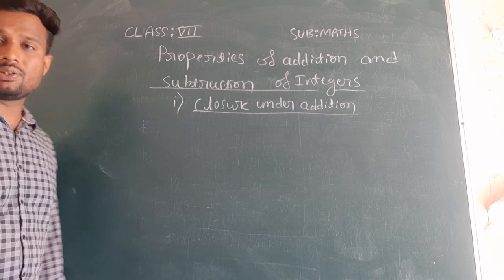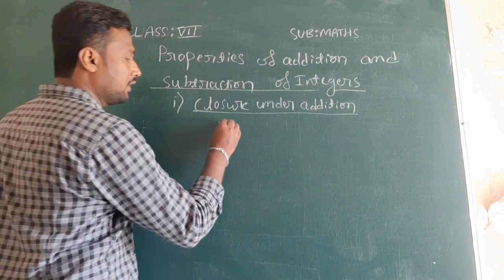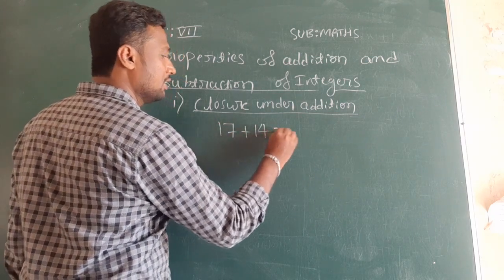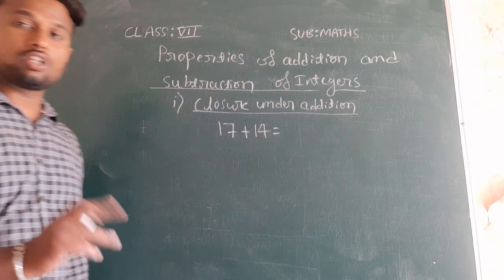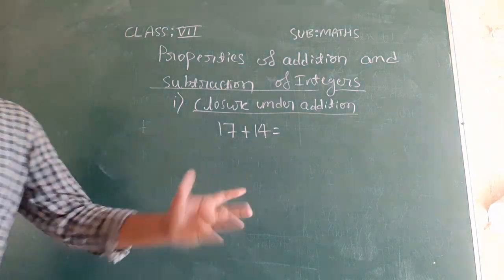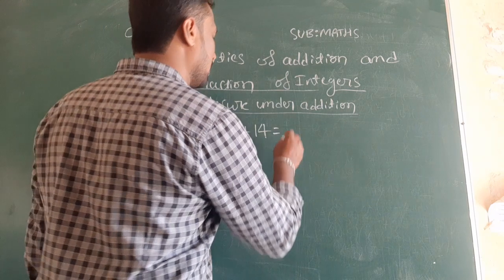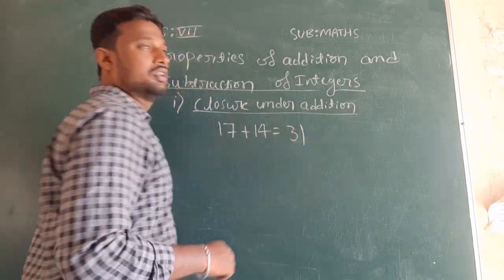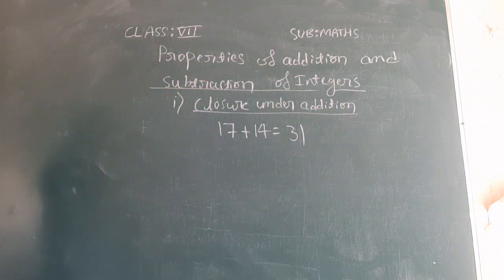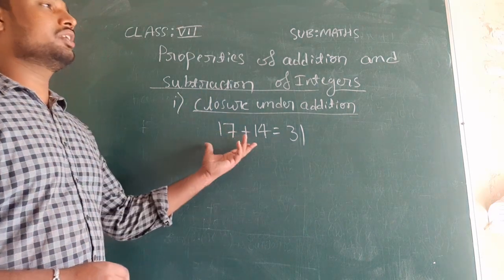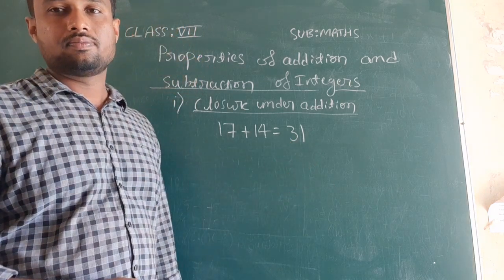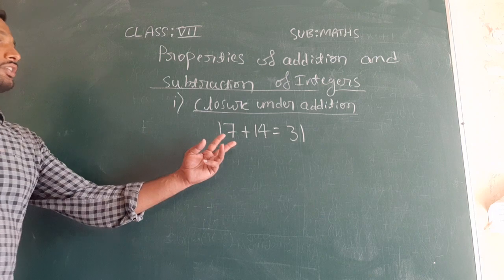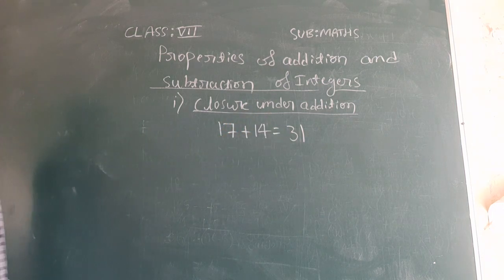I will consider two numbers. For example, 17 plus 14. So 17 plus 14 means we get 31. You can see that 17 is also an integer and 14 is also an integer. When you add these two integers, again you are getting an integer only, that is 31. These two are positive integers and again we are getting an integer only. So you can say that it is closed under addition.